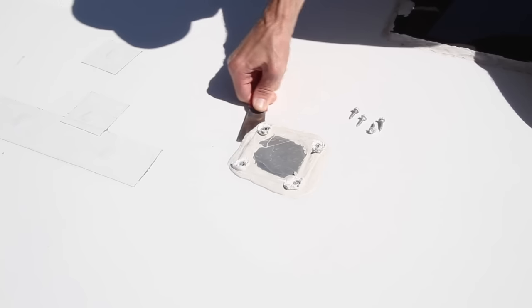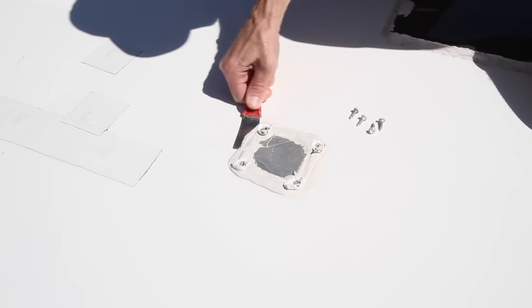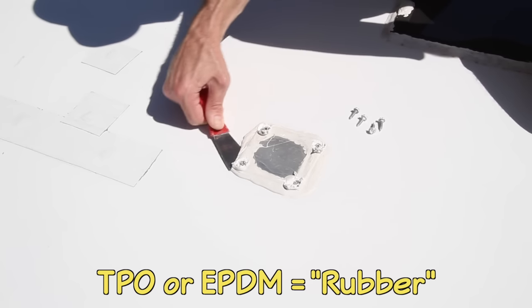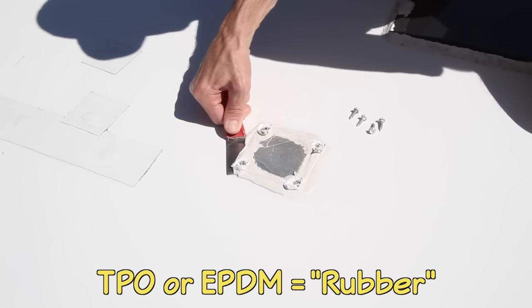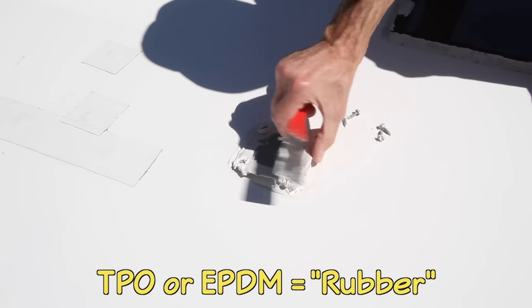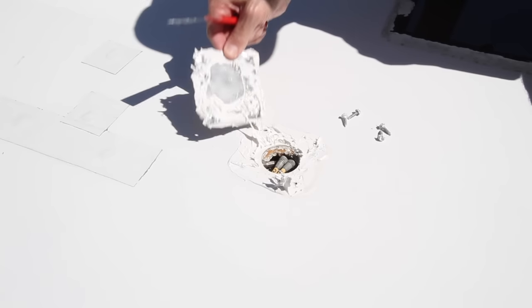Our roof is fiberglass and pretty impervious to just about anything. If you have a TPO or EPDM roof, commonly referred to as a rubber roof, be careful not to cut or damage the roof material with the putty knife.